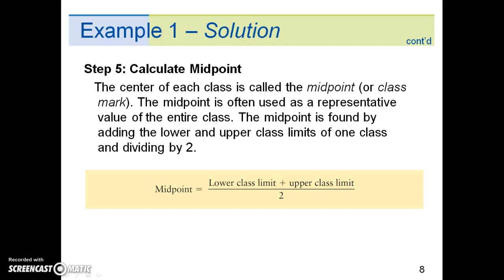Step 5 is to calculate the midpoint. The center of each class is called the midpoint or class mark. The midpoint is often used as a representative value of the entire class. The midpoint is found by adding the lower and upper class limits of one class and dividing by two.